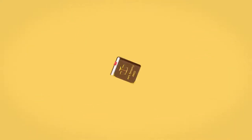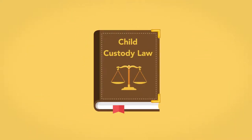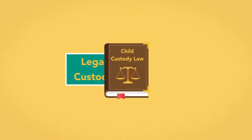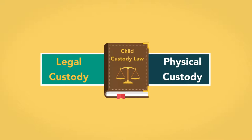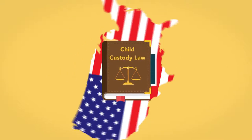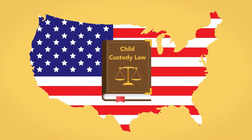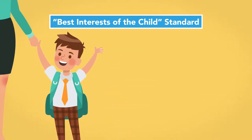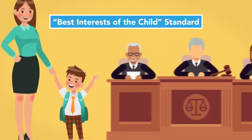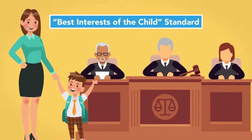In this module, we'll learn the basic tenets of child custody law. We will begin by examining the difference between legal and physical custody. Next, we'll explore the history of child custody in the United States, learning about different approaches. Finally, we will explain the best interests of the child standard and how courts are currently implementing it to reach a child custody determination.